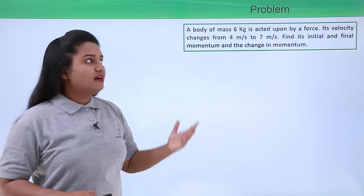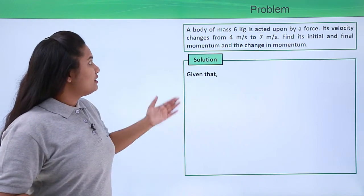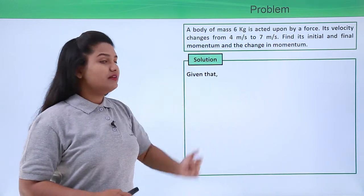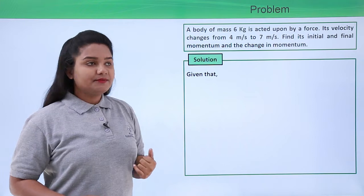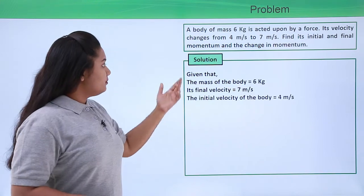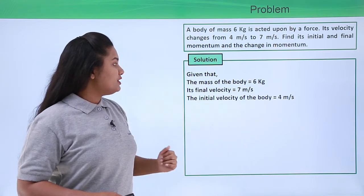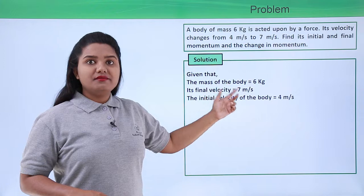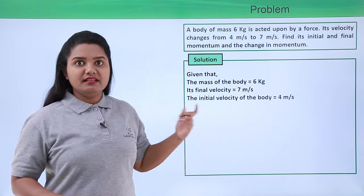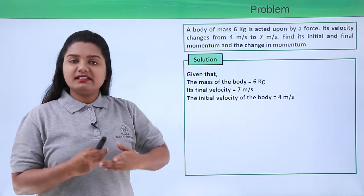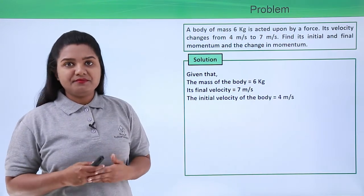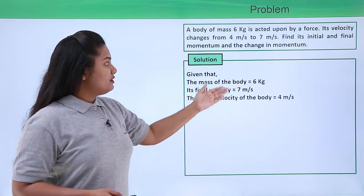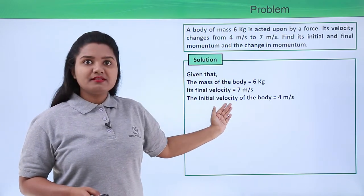Let us start solving the problem. First, we will be listing out whatever is given in the question. The mass of the body is given to be 6 kg. Its final velocity is given to be 7 meters per second and its initial velocity is given to be 4 meters per second.